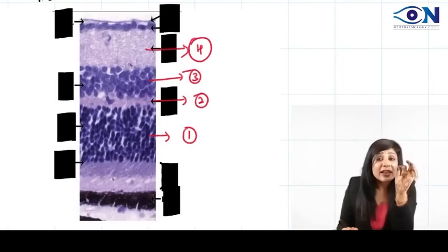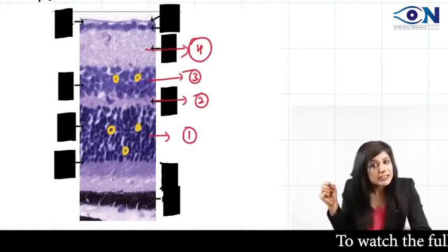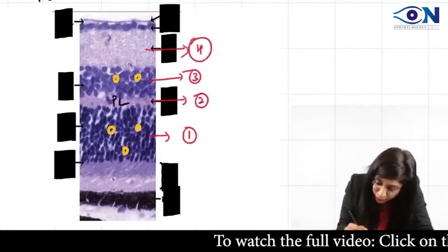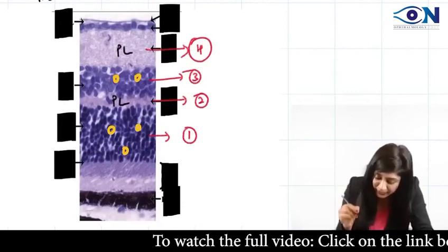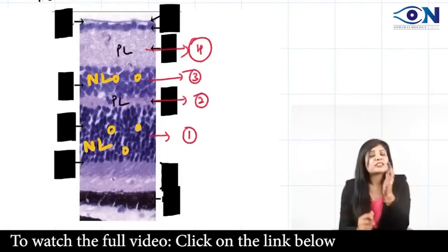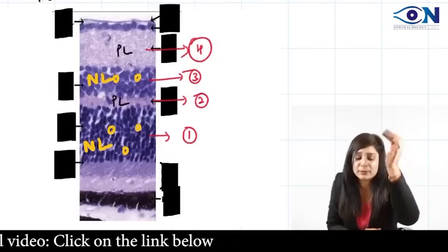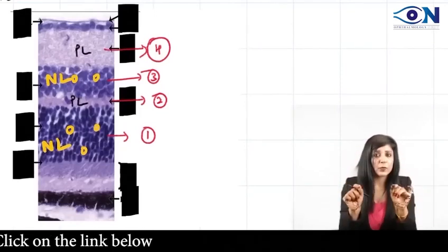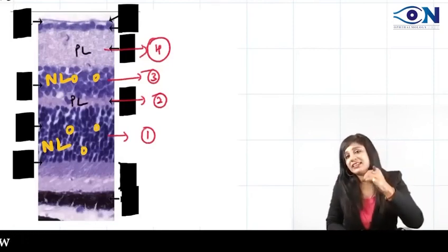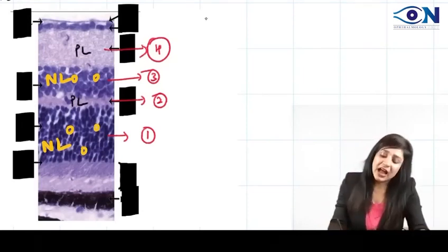Within fractions of a second you can find out: is it a nuclear layer or a plexiform layer? The darkly pigmented areas are the nuclei — those are nuclear layers — and the lighter areas are plexiform layers. So alternating: nuclear layer, plexiform layer, nuclear layer, plexiform layer. The only remaining thing is to determine whether it is the outer side or the inner side.